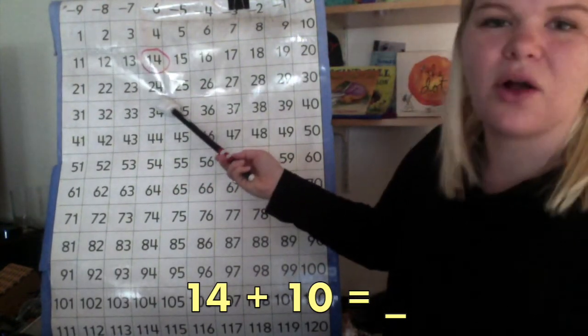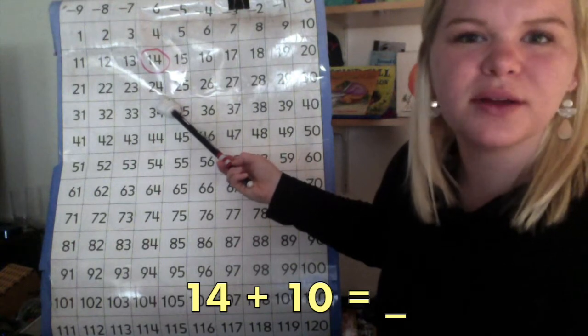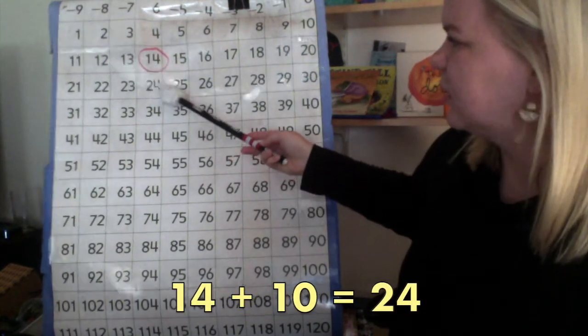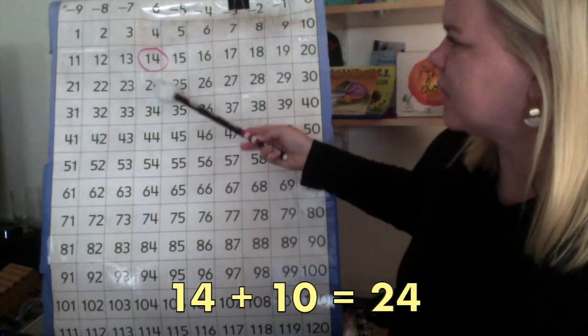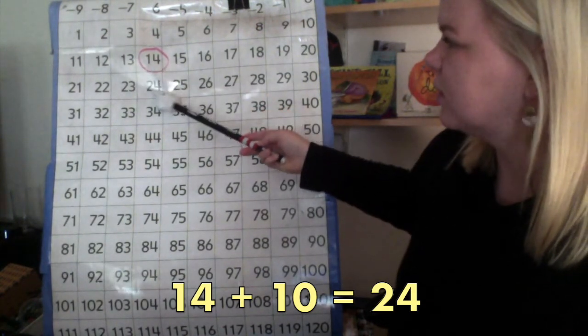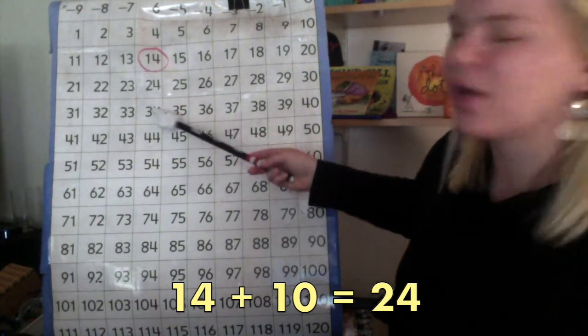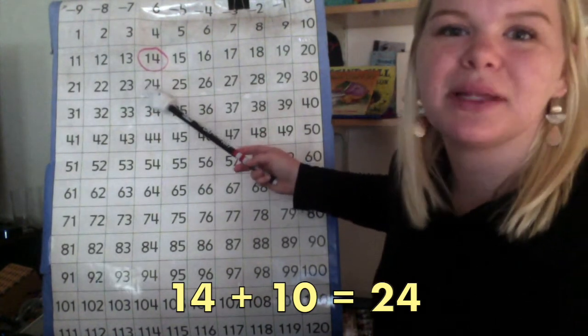We landed on the number 24, so that is our answer. But, look where my pointer is. It's right below the number we started on. We remember that when you hop down on the number grid, that means plus 10.